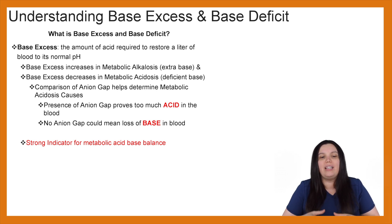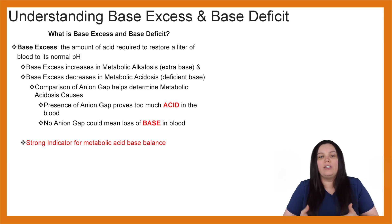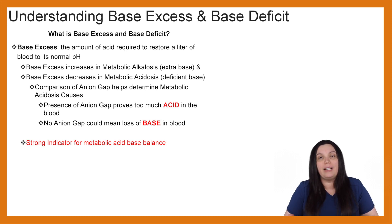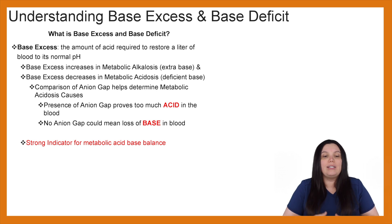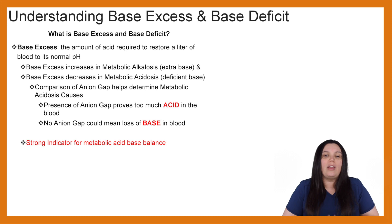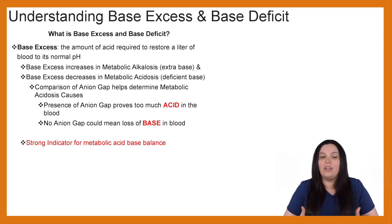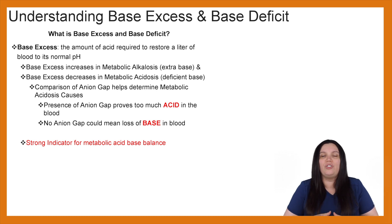We can use our anion gap to compare and help us determine what's going on with our metabolic acidosis. If our anion gap is present, it proves that we have too much acid in our blood. Whereas if we have no anion gap discrepancies, that could potentially mean that we have a loss of base within our blood. So it's a very strong indicator when it comes to metabolic acid-base balance.